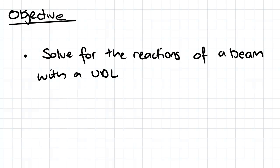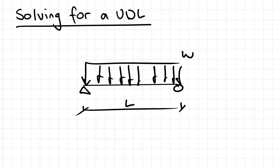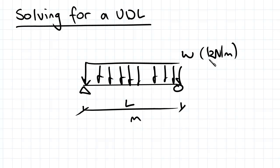The objective for this video is to solve for the reactions of a beam with a UDL. First, we look at finding the equivalent point load for a UDL. We have a UDL acting with a load of W kilonewtons per meter over a distance L. Since the units are kilonewtons per meter multiplied by meters, the equivalent force in kilonewtons is WL.